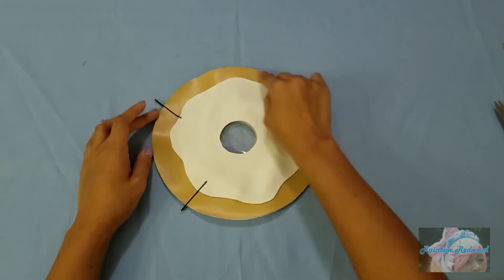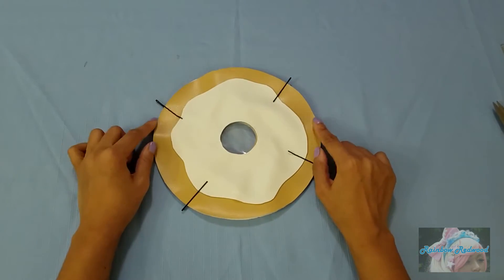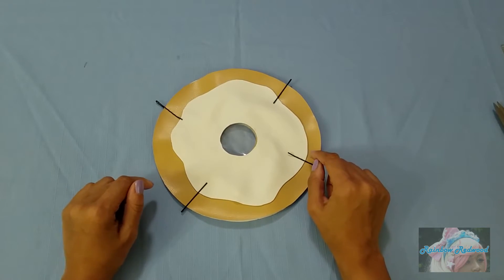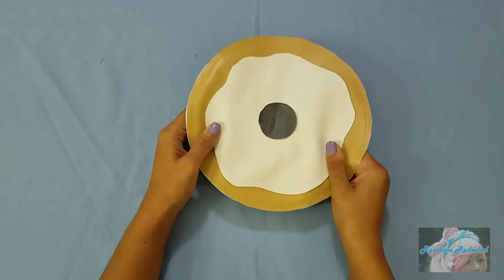Sew around your donut twice, the first time using a one-fourth seam allowance and the second time using a one-eighth seam allowance. Now your clutch is almost complete.